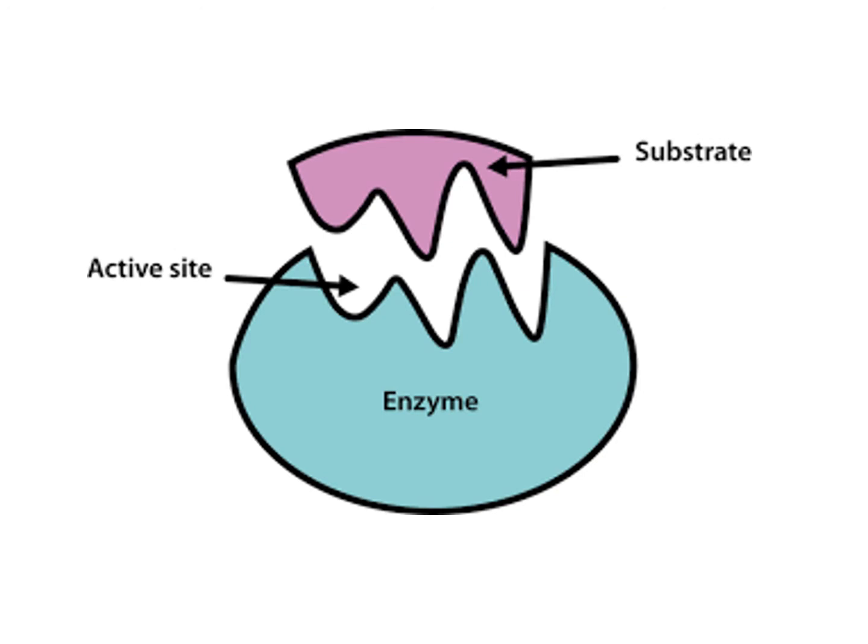Why does that matter? Well, proteins are really, really important in all living things. Take one example we've looked at before, which is enzymes. Enzymes are essential for catalyzing — so speeding up — the reactions inside our cells. Without enzymes, we wouldn't be able to survive. More specifically, it's the active site of the enzyme, which is where the substrate binds, that is important. The shape of the active site is specific to the enzyme because the substrate must be complementary to it and fit inside it.